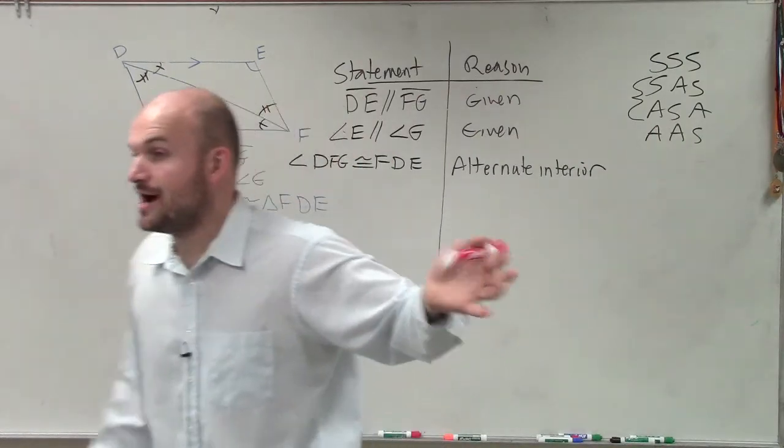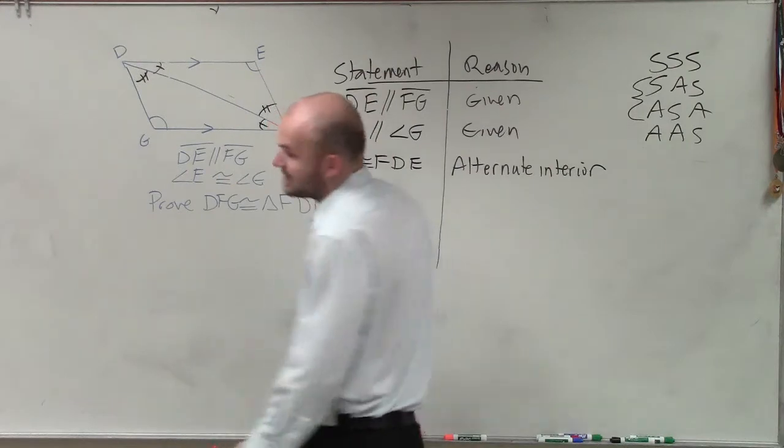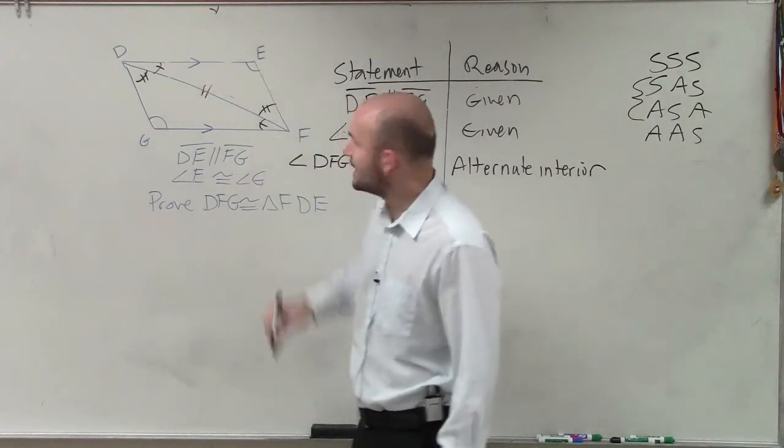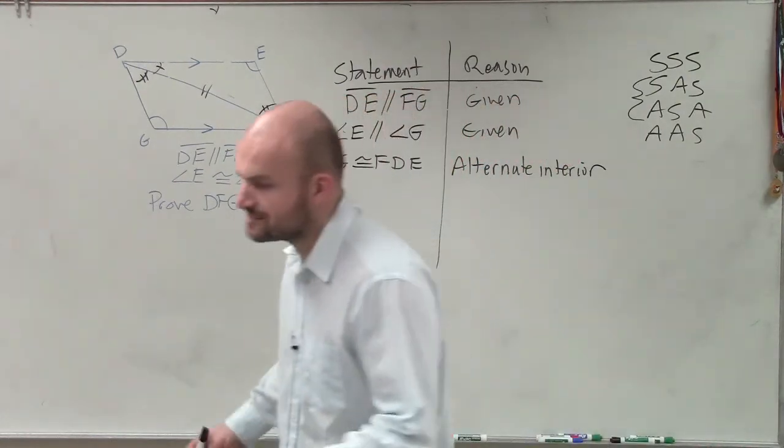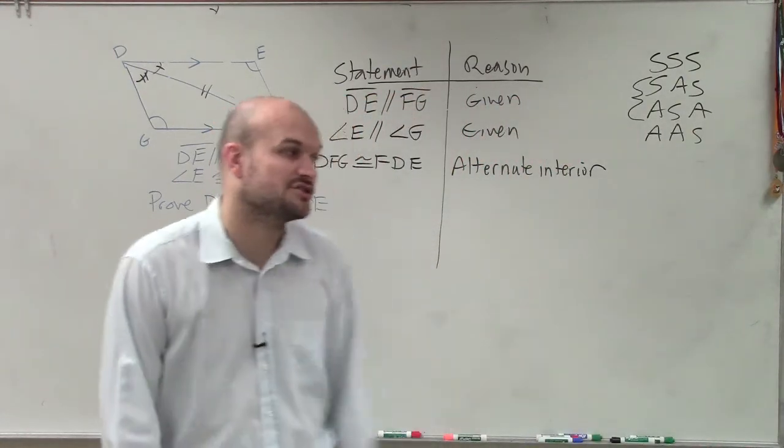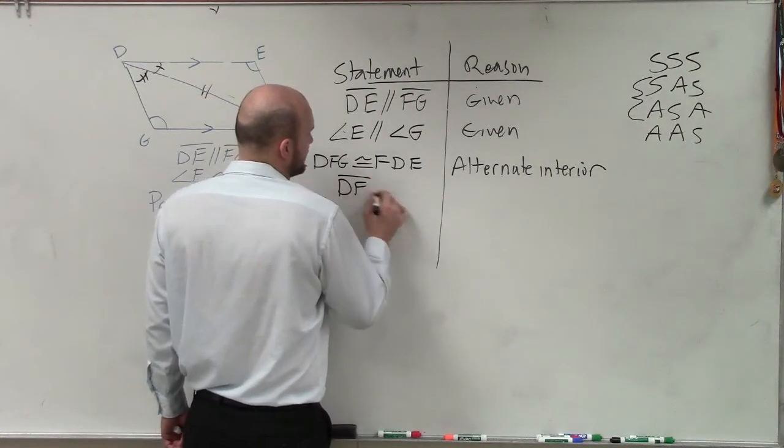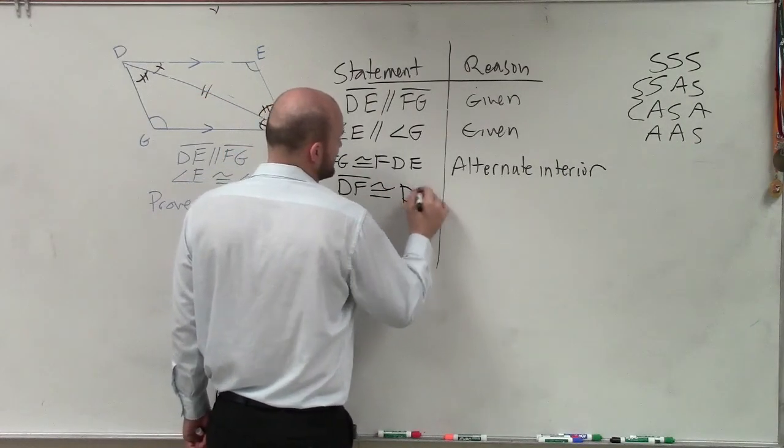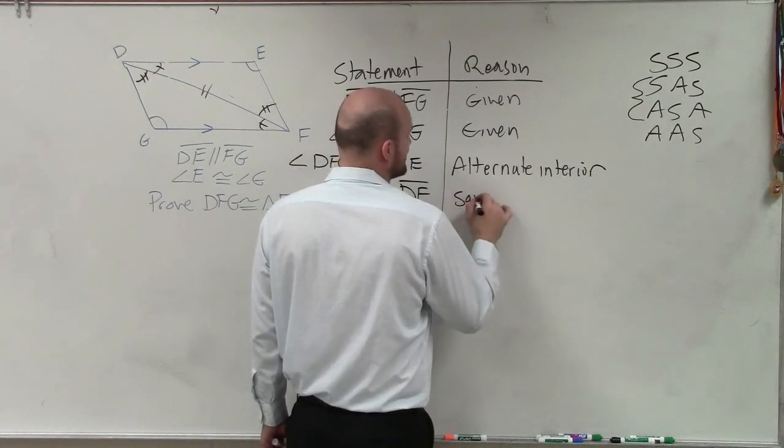So we need to figure out what is a side length that is equal. And the most obvious side length that we could say is equal is this line, DF. The reason why DF is equal to DF is because of reflexive property, or what we like to call the same side. So I can say line DF is congruent to line DF because they are reflexive, or the same side.